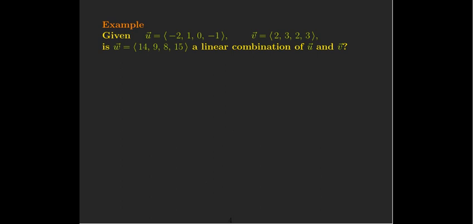Here's a more interesting example. If I'm given two vectors in R4, I'd like to know if a third vector is a linear combination of the given vectors. So I have u and v. Is w a linear combination of u and v?